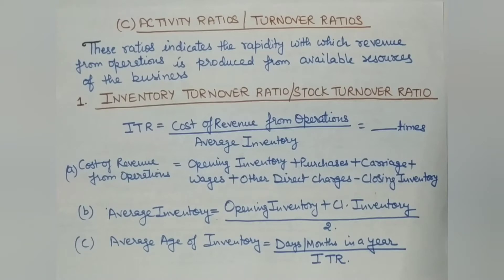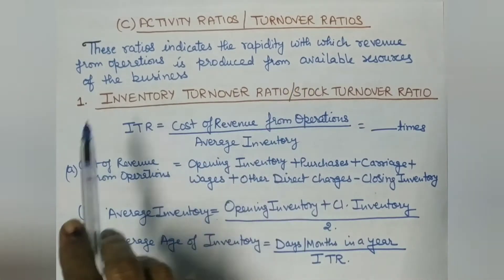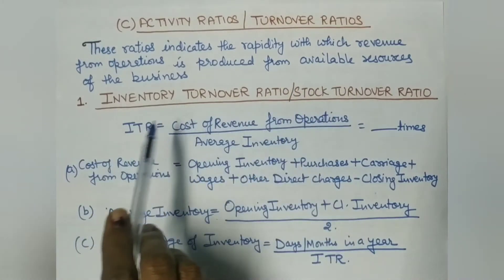Hello and welcome to Commerce Made Easier. In today's lecture of accountancy class 12, we will discuss ratio analysis. We have already discussed in the previous lectures about two ratios — liquidity ratios and solvency ratios. Today we will discuss the third type: activity ratios or turnover ratios. These ratios indicate the rapidity with which revenue from operations is produced from the available resources of the business.